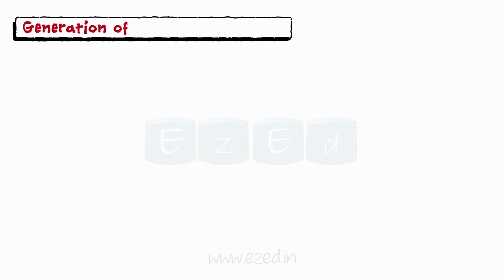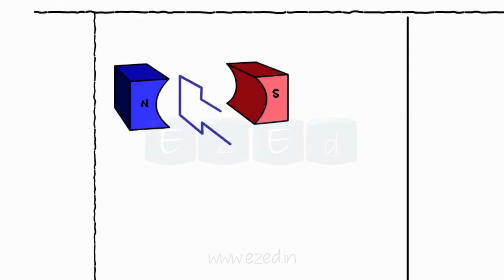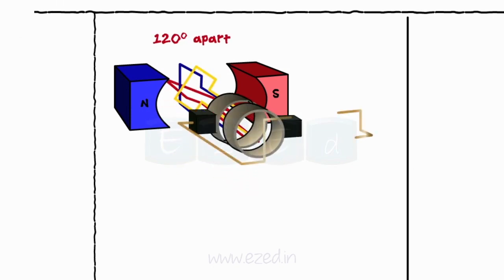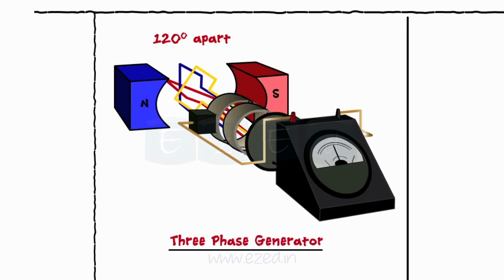So let's study the generation of the three phase signals. In the three phase generation, we connect the three conductors 120 degrees apart from each other and the remaining structure remains the same as that of the single phase generator.